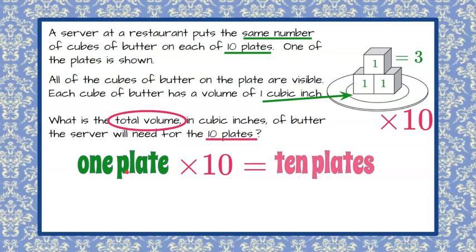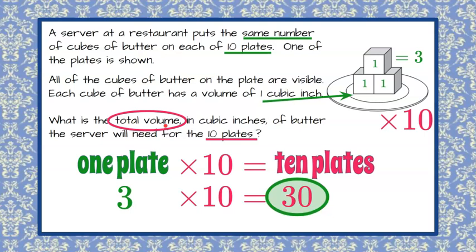We know that 1 plate is 3 cubic inches. We're going to multiply that by 10. That gives us 30 cubic inches for our answer. So the total volume for 10 plates, identical to this one, is 30.